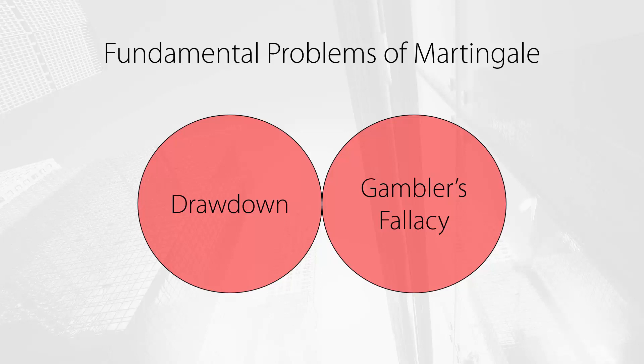That's false, and that's the core of the problem. For a martingale system to work in reality, the trader would need an infinite amount of capital. That's the reason traders who use martingale always end up losing the entirety of their capital.